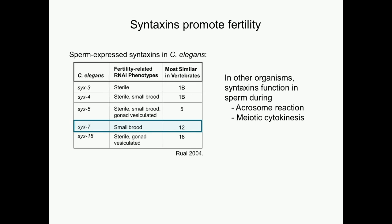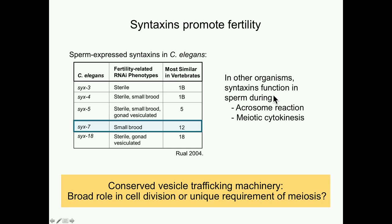So 6-7, or Syntaxin-7, is part of a conserved family of genes that assist in membrane fusion events during trafficking. Work from other labs had already shown that Syntaxins expressed in sperm promote fertility. Additionally, in other organisms, Syntaxins have been studied for their function in the acrosome reaction — a specialized exocytosis event — and they have also been shown to function in meiotic cytokinesis. So it wasn't too surprising that I was able to identify a specific Syntaxin that functions in sperm development. What we're really excited about is that this gives us a starting point to look at conserved vesicle trafficking machinery functioning in a specialized asymmetric cell division, and ask whether these proteins play a broad general role or fulfill some unique requirement for meiotic divisions.